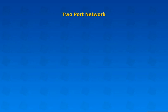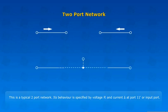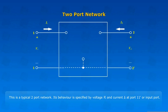Two-Port Network. This is a typical two-port network. Its behavior is specified by voltage VI and current II at port 1, or input port, and the voltage VO and current IO at port 2, or output port.